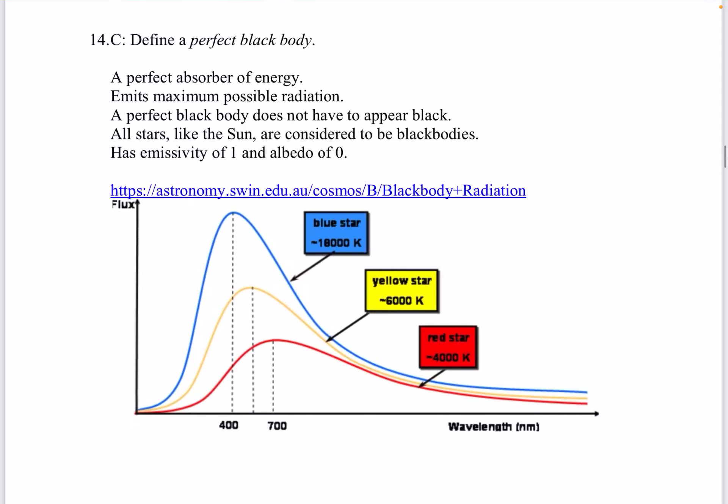Question 14. Define a perfect black body. It's a perfect absorber of energy. Emits maximum possible radiation. Perfect black body does not have to be black. All stars like the sun are black bodies. Has an emissivity of one and an albedo of zero. So remember this image from topic B.